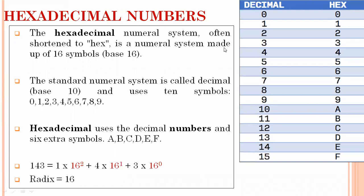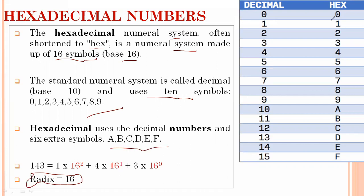The next number system is hexadecimal, also called hex for short. It is a numeral system made of 16 symbols, so its base — or radix — is 16. The standard decimal system uses 10 symbols from 0 to 9, so for the remaining six symbols in hexadecimal, we use the letters A, B, C, D, E, and F. Values 0 through 9 are represented as 0 to 9.